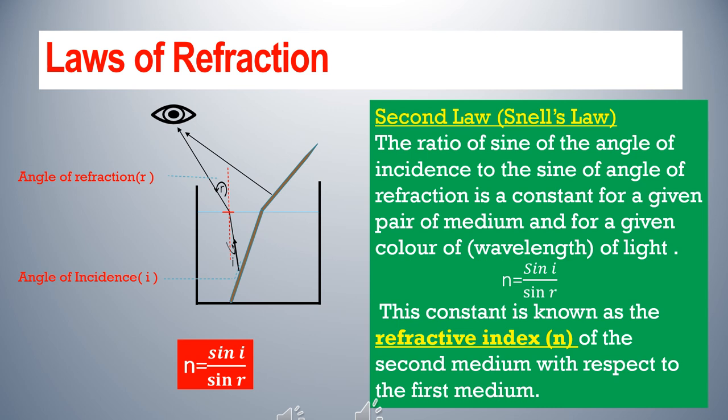Refractive index n = sin i / sin r, but this is only for the same pair of media. The value of refractive index will change if we change the media. For example, in an air and water medium you will get the same refractive index for a given color of light. But if you change the medium to air and glass, the refractive index will be different.